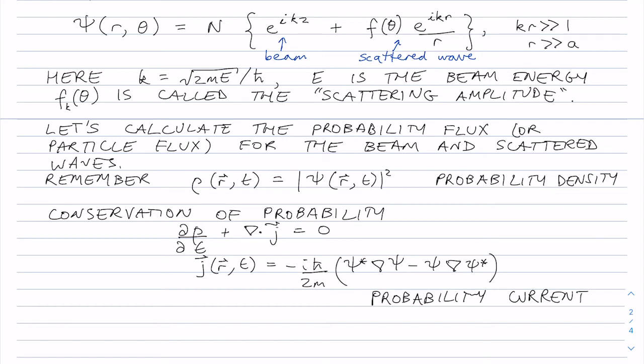If you don't remember that, you should probably go and look it up or convince yourself that it's true. Make sure that you understand that with these definitions of rho and j, that you can satisfy the free particle Schrödinger equation. So j is the probability current or flux. And remember the meaning of the continuity equation here. This is the continuity equation.